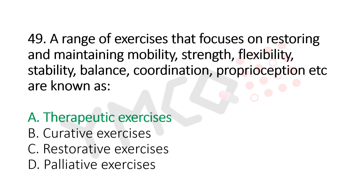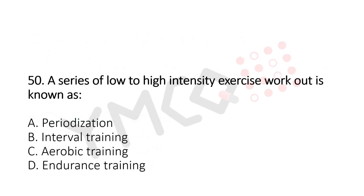Question number 50: A series of low to high intensity exercise workouts is known as: Option A, periodization; Option B, interval training; Option C, aerobic training; Option D, endurance training. The answer is Option B, interval training.